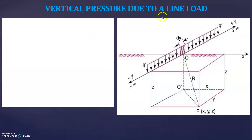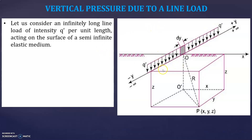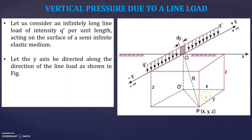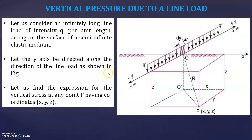Let us first take vertical pressure due to a line load. This is a uniformly distributed load — a line load with intensity q-dash, acting on the surface. We consider an infinitely long line load of intensity q-dash per unit length acting on the surface of a semi-infinite elastic medium. Let the y-axis be directed along the direction of the line load. We want to find the expression for vertical stress at any point P having coordinates x, y, z.